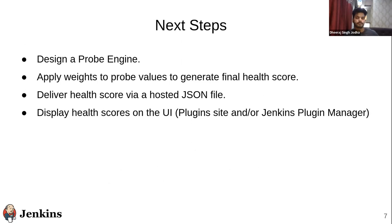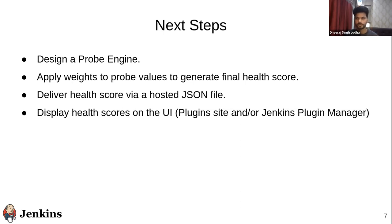What's next for this project? We are working on designing the probe engine, which is going to determine and store the logic for each and every probe — like how it works and how it helps analyze a plugin's repository. Then we're going to use a process that will apply weights to the probe values to generate the final health score. That final health score is going to be delivered via a JSON file, just like how the update center file is hosted. Using that JSON file, the scores will be rendered on the UI of the plugin site or Jenkins plugin manager — though that's a decision for the future.